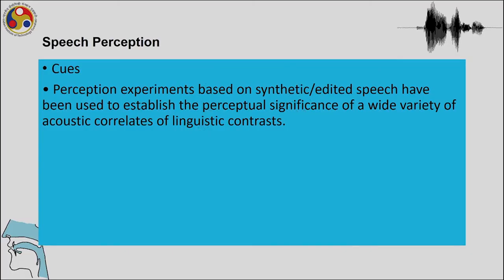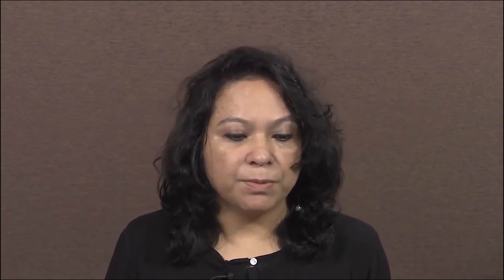Speech perception research and the ability to perceive speech has been shown to be based on cues — information which helps us extract the most important content so that we can discriminate contrasts and so that the word recognition process is optimum. Speech perception experiments based on synthetic or edited speech have been used to establish the perceptual significance of a wide variety of acoustic correlates of linguistic contrasts.